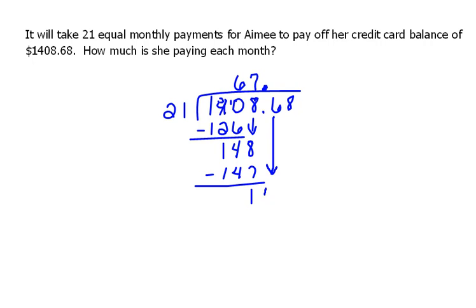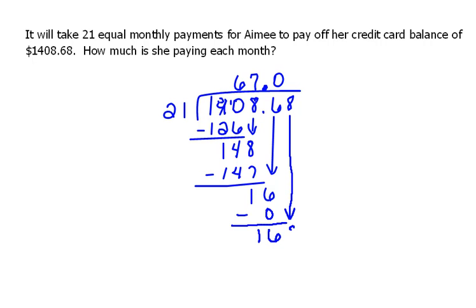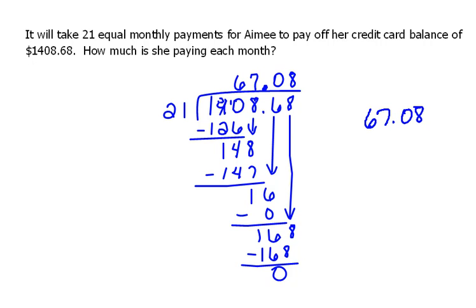Drop our next digit, which is a 6, and begin again. 21 will not go into 16, so we put a 0 there. 0 times 21 is 0. We do the subtraction, then drop our next digit. 21 will go into 168 eight times. 8 times 21 is 168, so that divides evenly. How much is she going to pay each month? That would be $67.08.